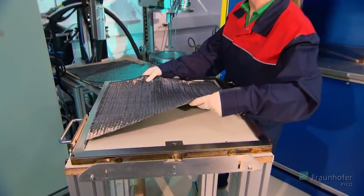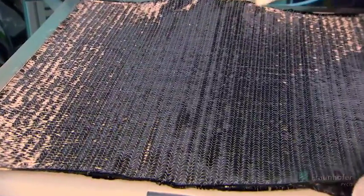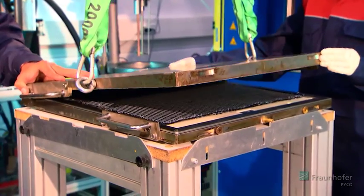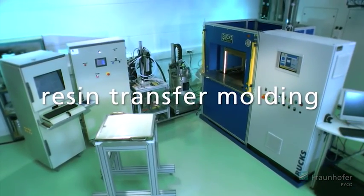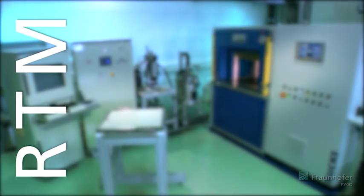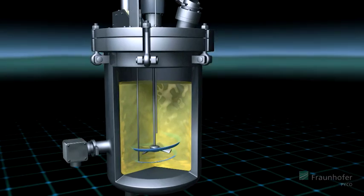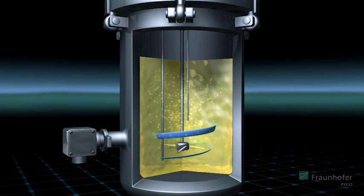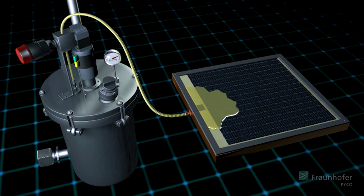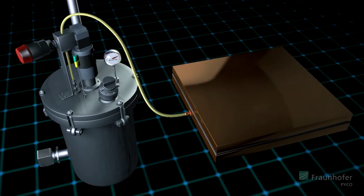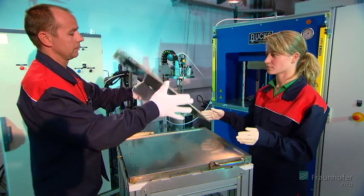Carbon fiber-reinforced components are also produced by resin transfer molding. At first, fiber mats are placed on a spray-coated base. Inside the sealed mold, the carbon fiber mats are then infused with a resin system. The fully cured components show best surface qualities and can be used without further processing.